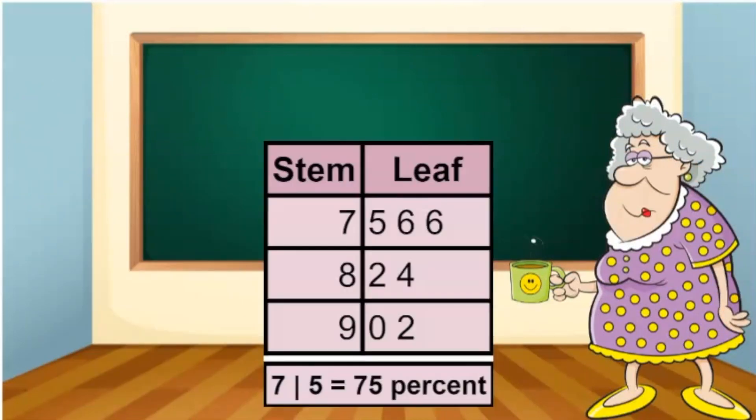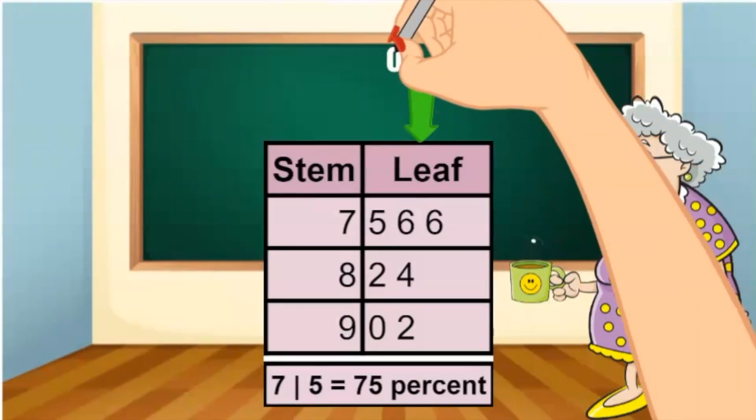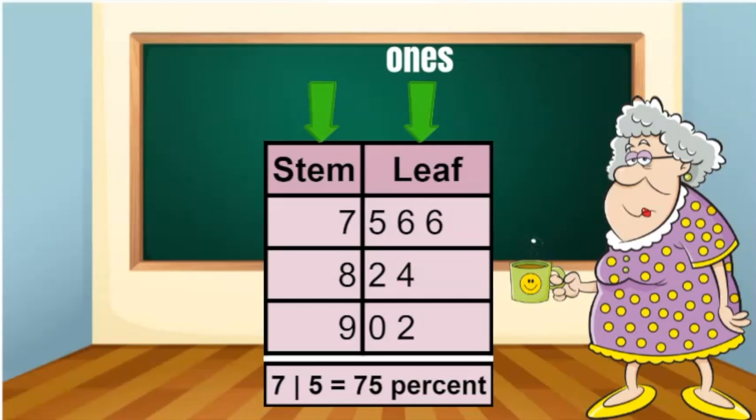Take a closer look. This column is the leaf. The leaf gives the digit in the ones place. This column is the stem. The stem is all the numbers before the ones place. There is just one digit in the stem, so it represents the tens place. The key down here explains that if seven is the stem and five is the leaf, the value is 75.